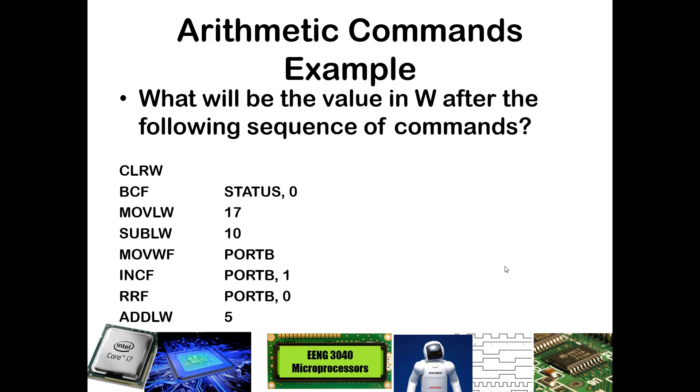Let's go ahead and trace through this example. In this case, we want to know what will be the value in the W register after the following sequence of commands. You may want to also keep track of things like PORTB and your status register to know what would be in W. You may want to go ahead and pause this video and work through tracing through the values of W, PORTB, and the status register. Then once you think you've done that, come back and we will explain.